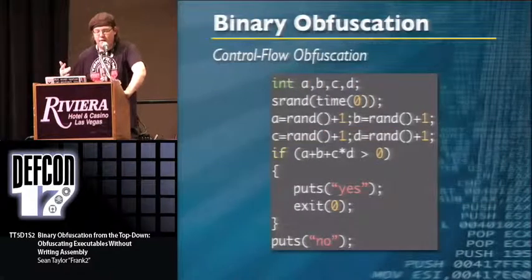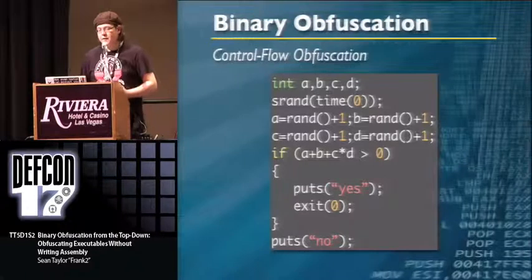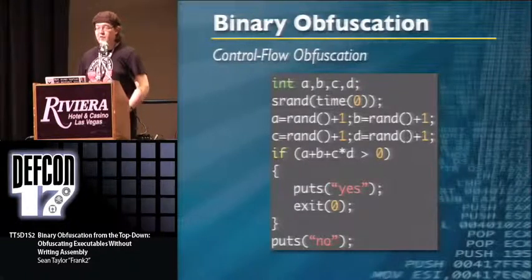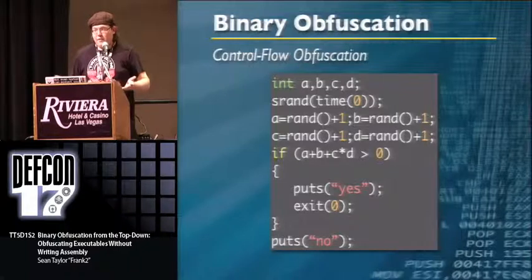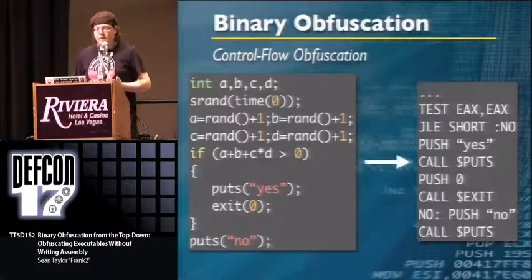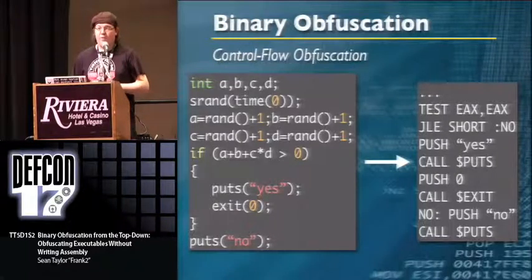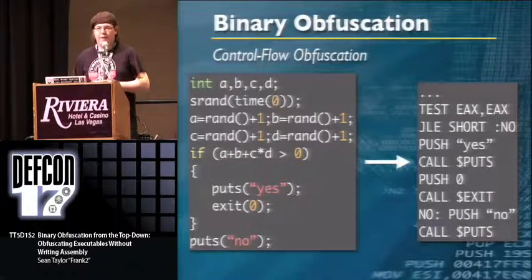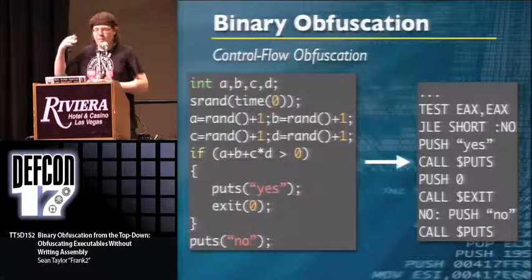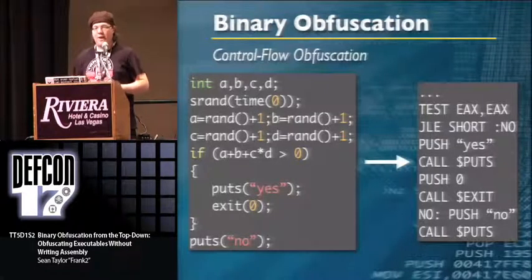But if we add entropy — making A, B, C, and D random numbers where each is greater than one — we don't even need volatile to mess with the compiler. Now the compiler looks at the statement and says 'I have no idea what's going to happen here — I better not touch that.' This is a great way to inject junk code: lots of red herrings and branches that never actually execute, forcing dead code analysts to waste time going down wrong paths.